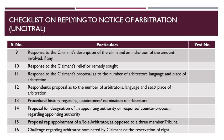The thirteenth item in the checklist is procedural history regarding the appointment or nomination of arbitrators. The fourteenth item is the proposal for designation of an appointing authority or response or counter-proposal regarding the appointing authority. UNCITRAL arbitration is ad-hoc arbitration, and therefore it is important to designate an appointing authority who is appointed based on consensus, if not already provided in the arbitration agreement. The respondent is free to make a counter-proposal on the appointing authority if it does not agree with the one proposed by the claimant.